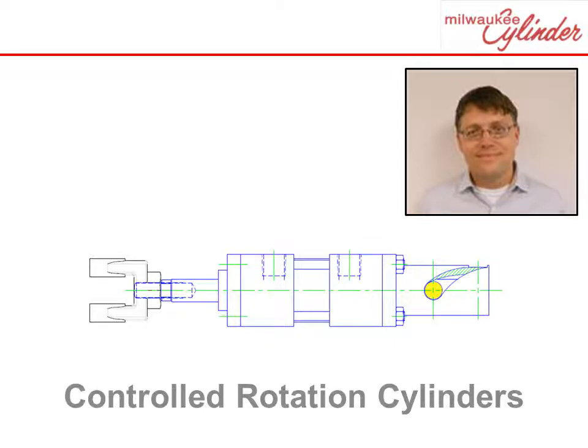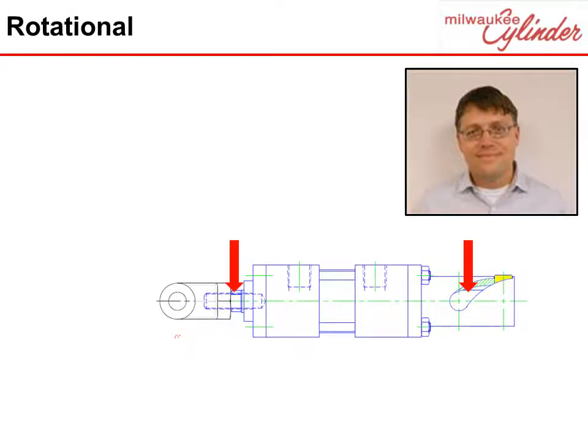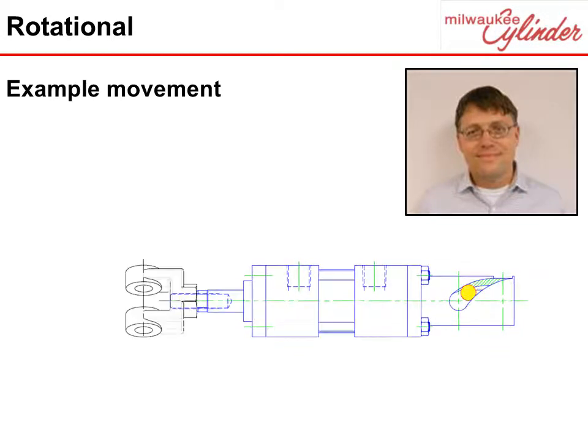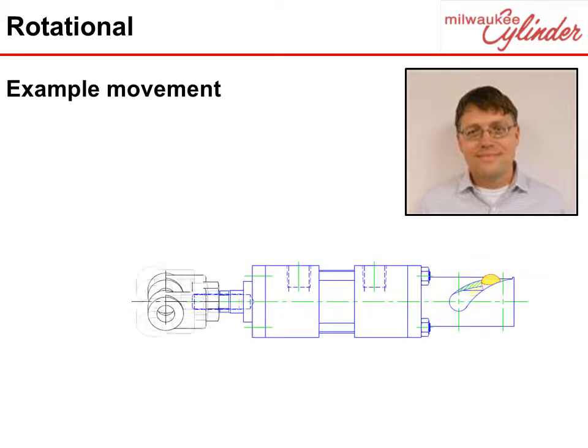Here is how it works. A double rod end cylinder is used where the non-working end is modified with a slotted rotational guide. The rod at this end includes a perpendicular pin that engages with the slot in the rotational guide. When the cylinder is activated, the pin follows the slot to provide precise rotational movement.